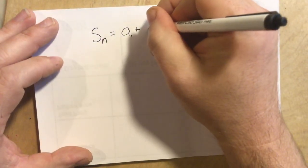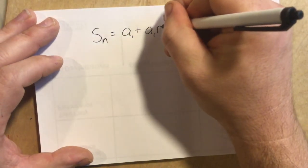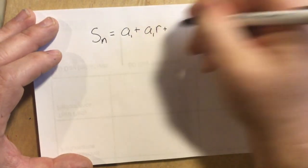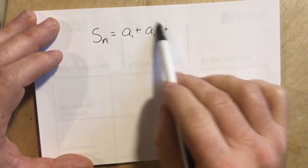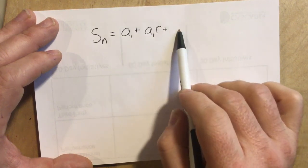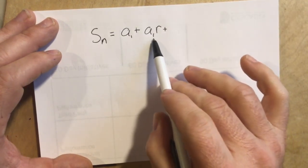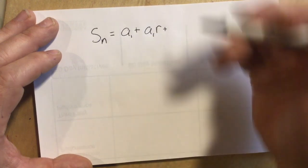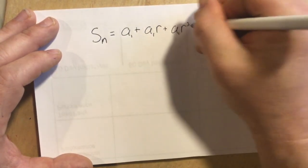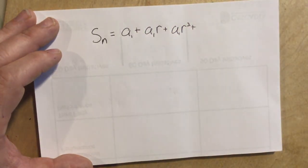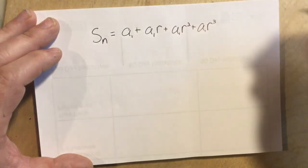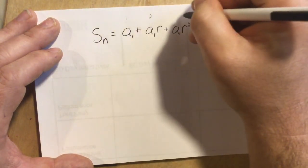Rather than just write a sub 2, we'll call it a sub 1 times the common ratio r — that's how you get the second term. How do you get the third term? We take the previous term and multiply by another r. So a sub 1 times r is the second term, the third term is a sub 1 times r squared, and the fourth term is a sub 1 times r cubed.